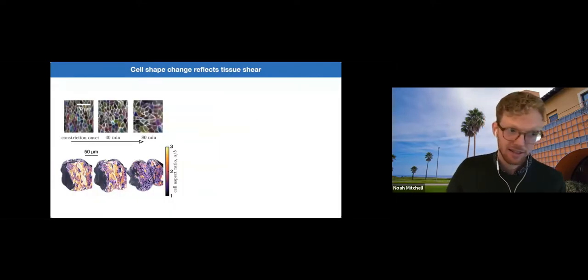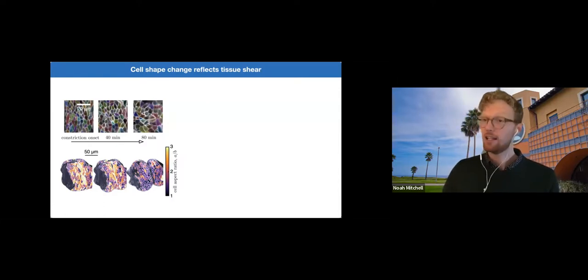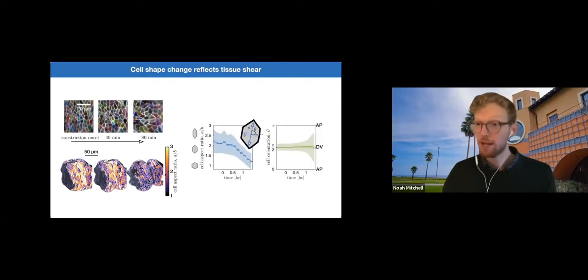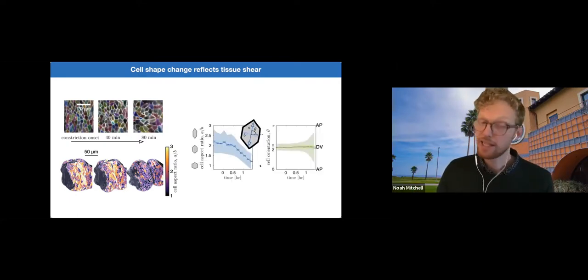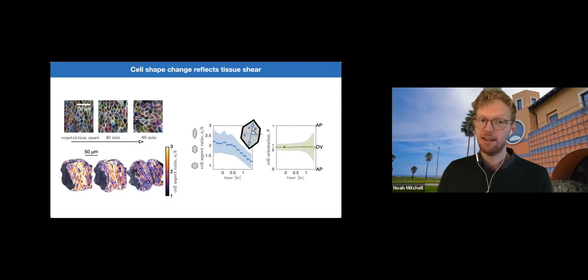So during this time course, we start off with endodermal cells, which are highly elongated. Here, they're colored by their aspect ratio. And over time, near these constrictions, this aspect ratio decreases, and the cells become more and more isotropic. So we can measure that. Their aspect ratios here are going down towards one, which would be isotropic. And this is not due to cell rotations, as the orientations of these cells remain steady.